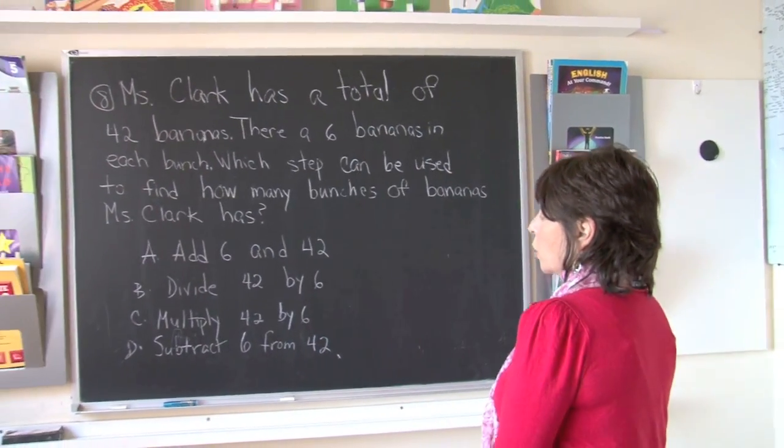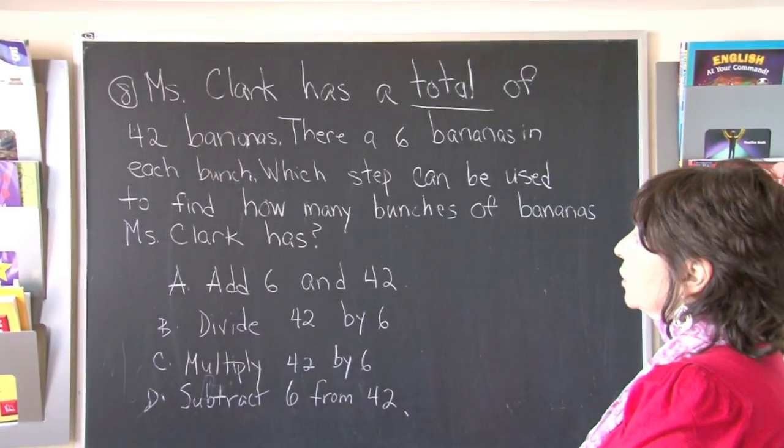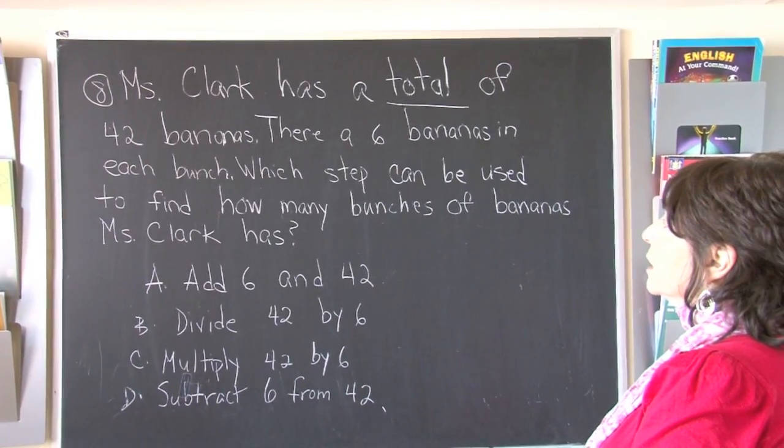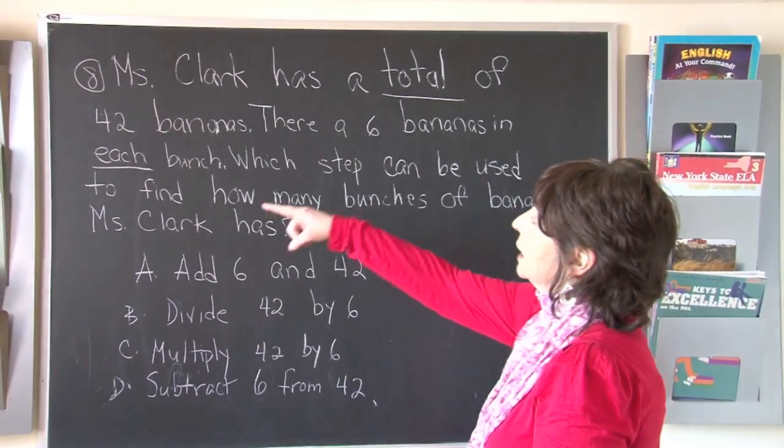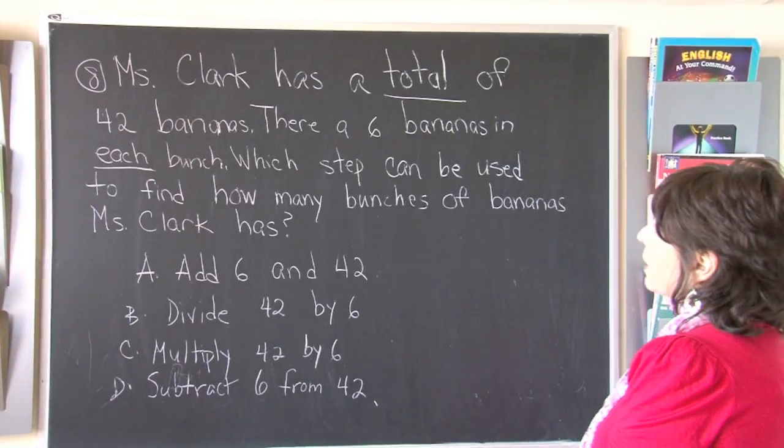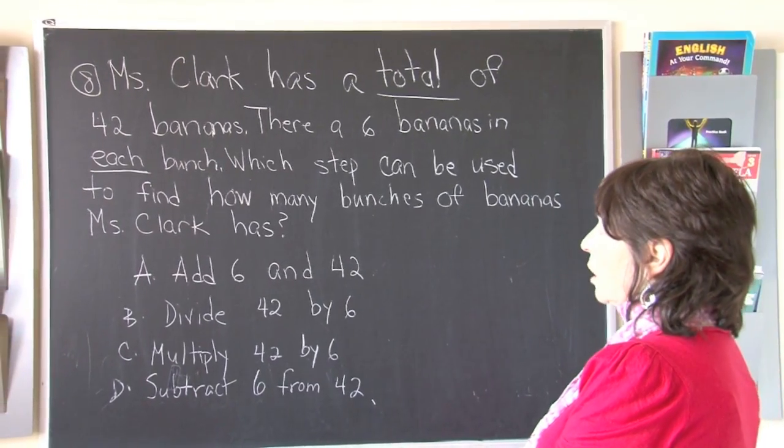Mrs. Clark has a total, boys and girls that will be a key word, a total of 42 bananas. There are 6 bananas in each bunch, that will also be a key word, total and each. Which step can be used to find how many bunches of bananas Mrs. Clark has?